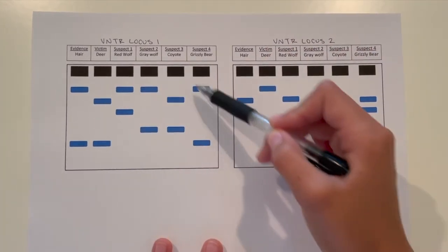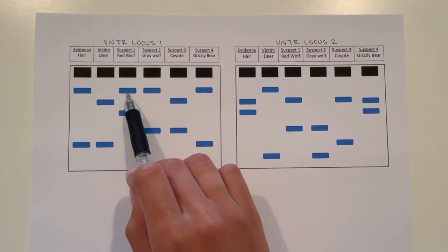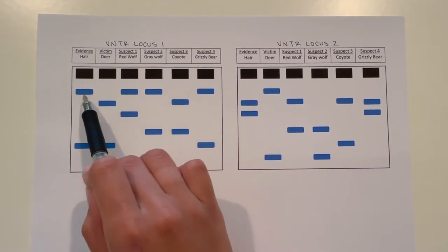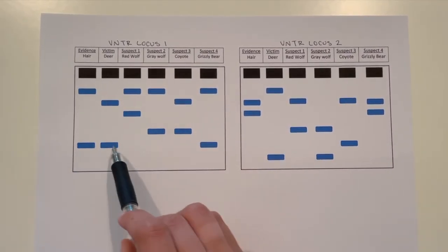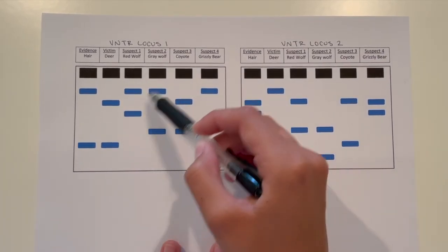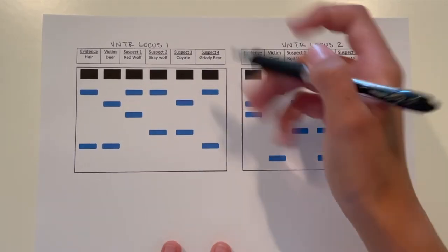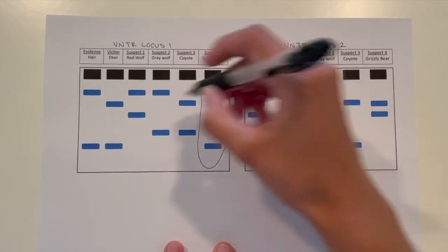So we can see that in this locus, these three share one, and then these two share one, but all three of these don't match both of them. But grizzly bear matches both of them.